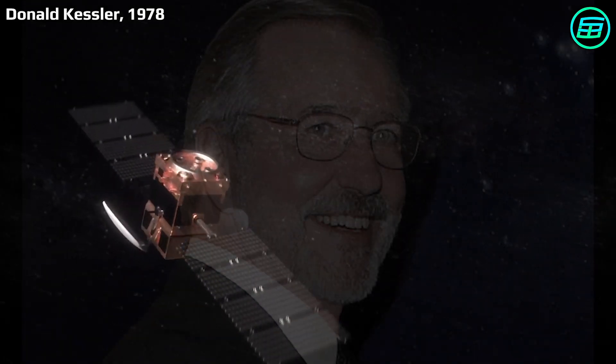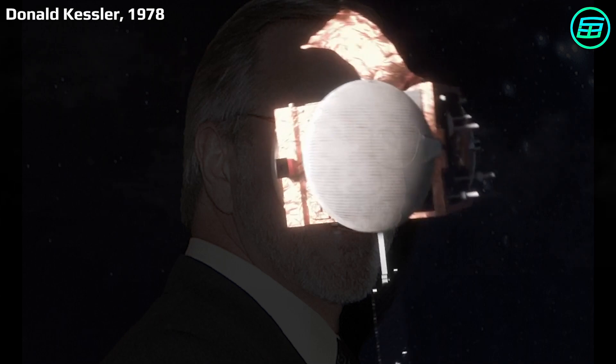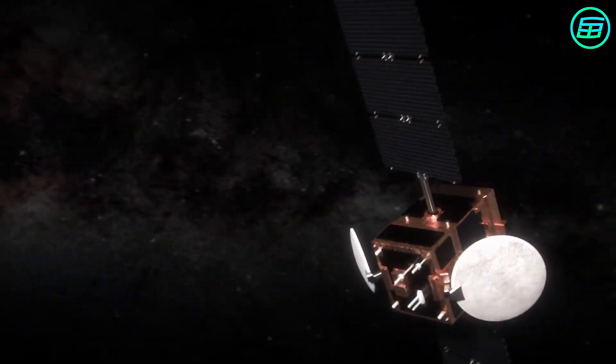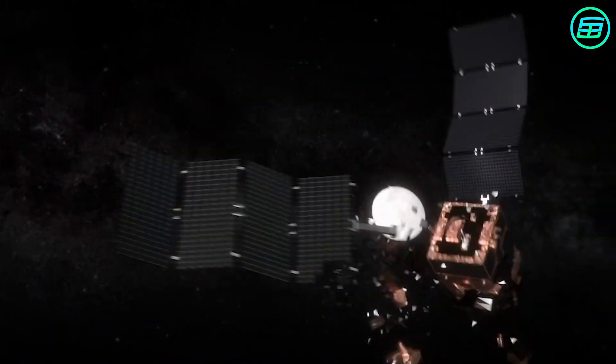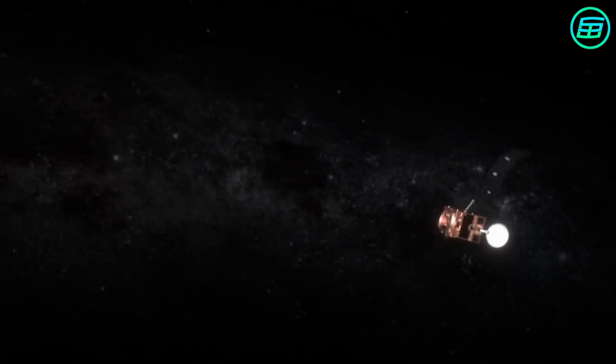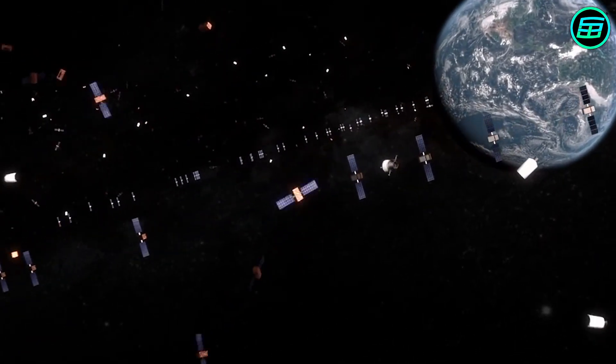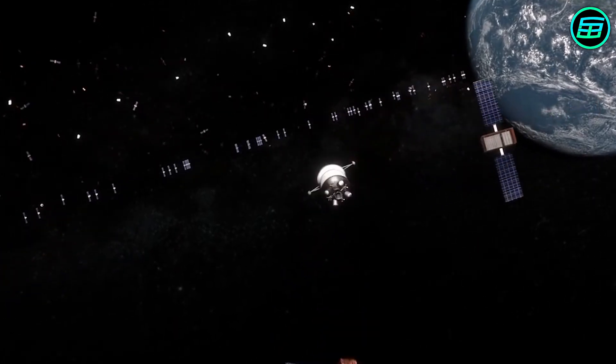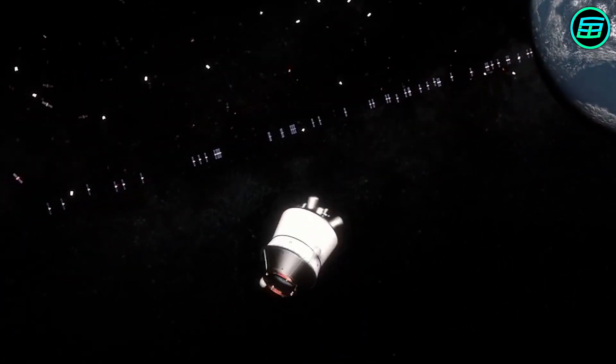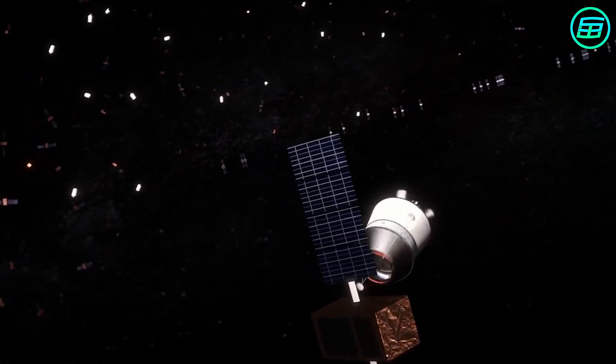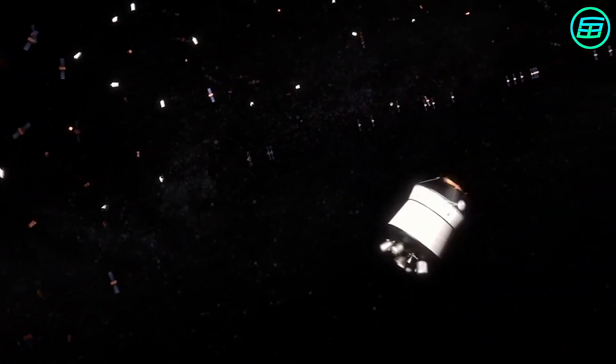In 1978, NASA scientist Donald Kessler predicted that space debris would collide with each other, break up into smaller pieces and cause a chain of events that would eventually surround Earth with a cloud of debris. As a result, no vehicle could be sent into space, and existing satellites would be destroyed through collision with debris fragments. Kessler predicted that the cloud would envelop the world for generations, rendering space studies and satellite technology useless for the foreseeable future.